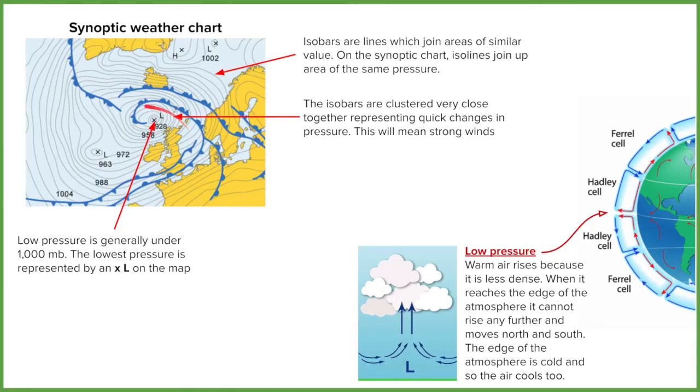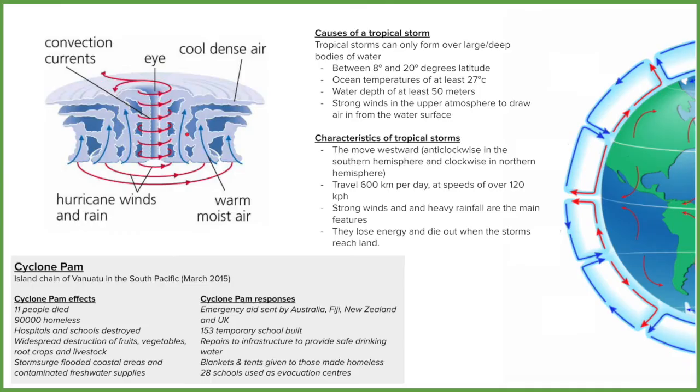If this low pressure system was occurring a little further south near the equator, then this could produce a tropical storm. So tropical storms can be named depending on where they're formed. In the northern hemisphere around North America they're called hurricanes. They're also called cyclones and typhoons.